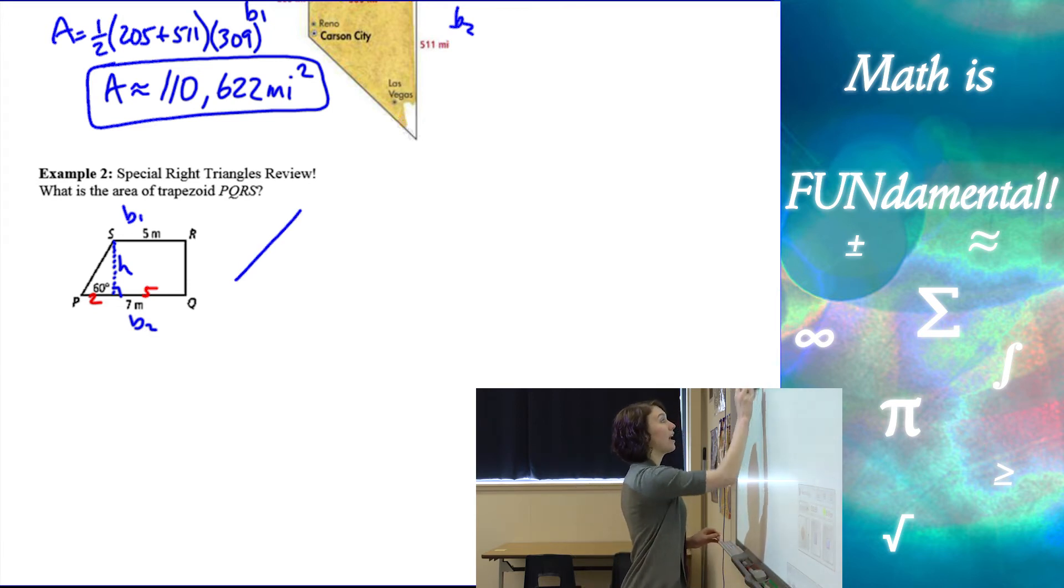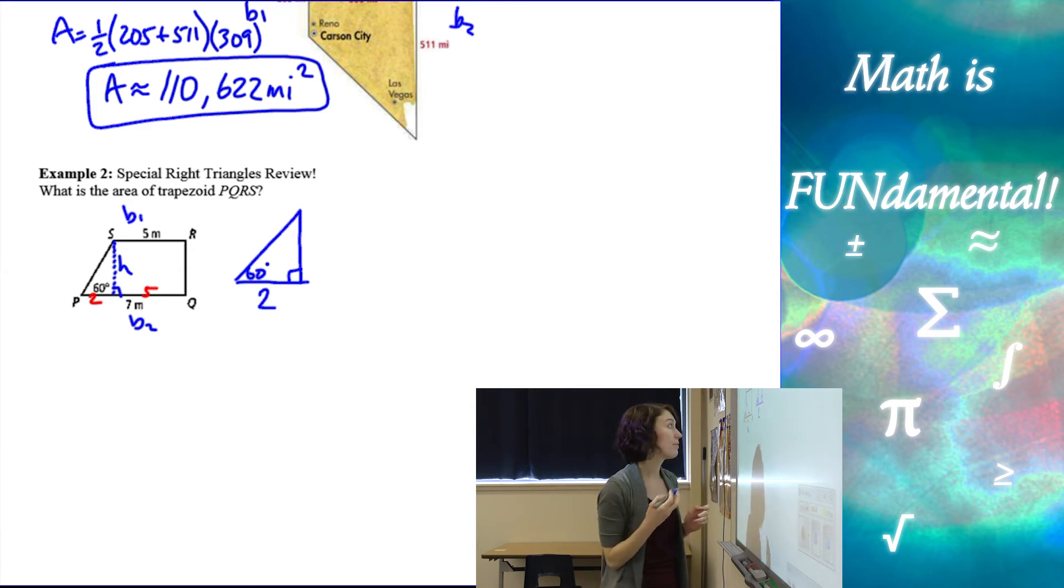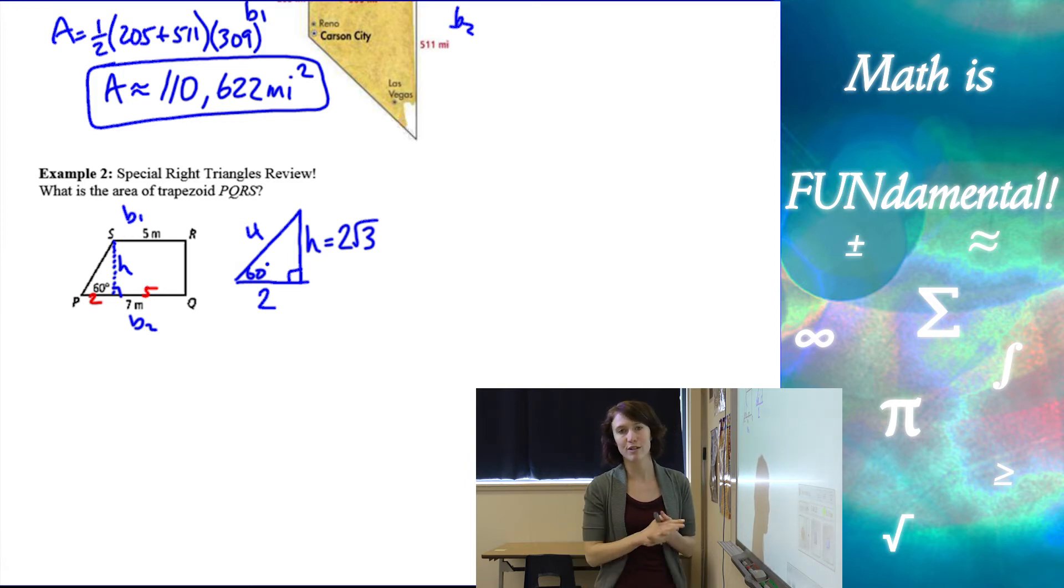So now if I have this special right triangle with 60 degrees and a side length of two, I know using my pattern that this side, the slanted hypotenuse of the triangle, is going to be a four. It's always double the shortest side. And then our other leg, which happens to be our height here, is going to be two times the square root of three. And if you don't remember how to do that, you can always go back and watch my video on special right triangles.